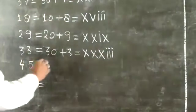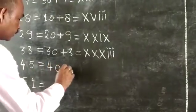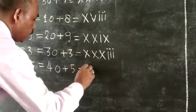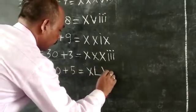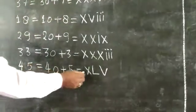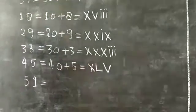Next, 45: 40 plus 5 equals XL plus V, so XLV.